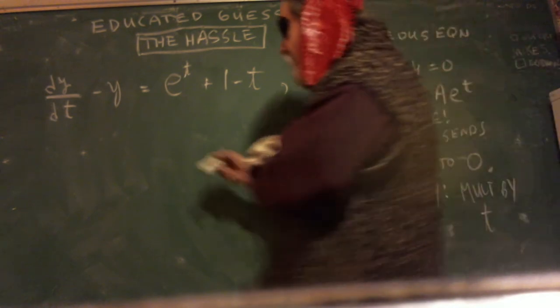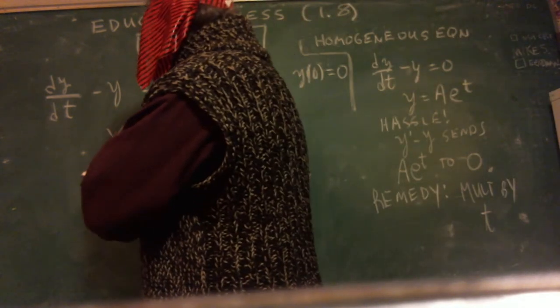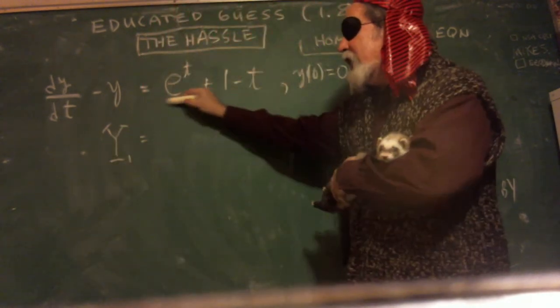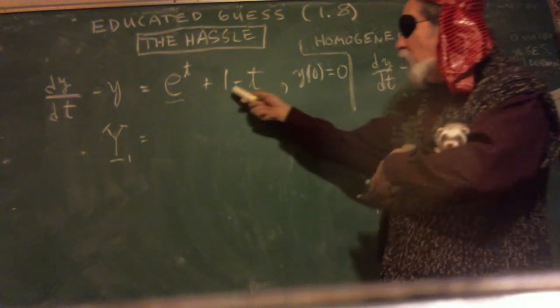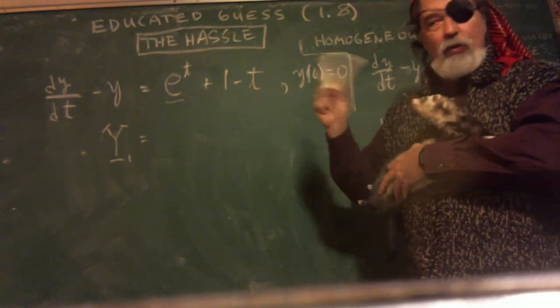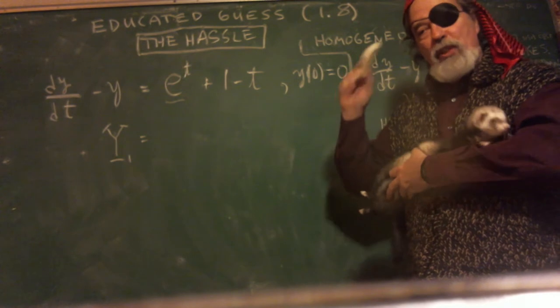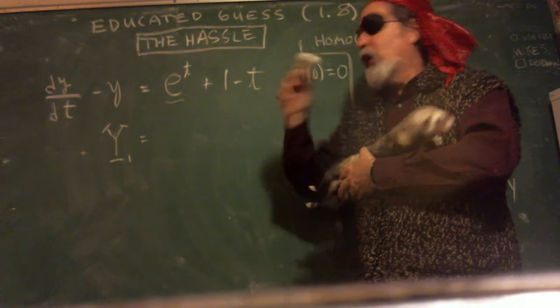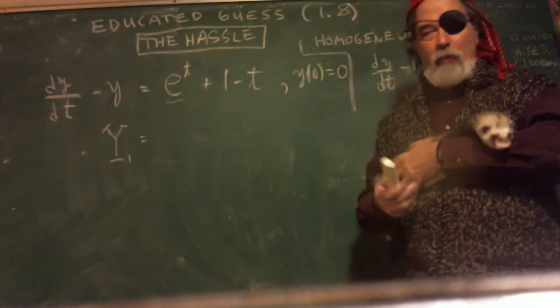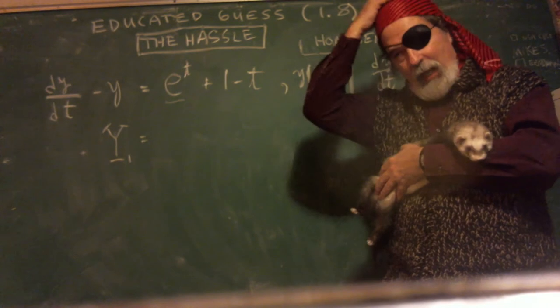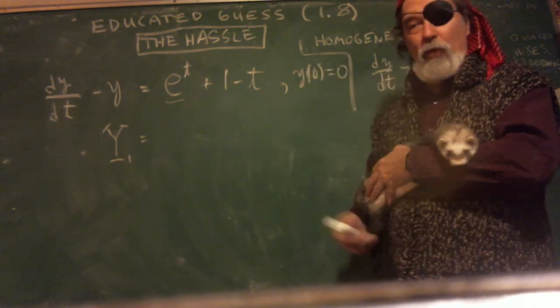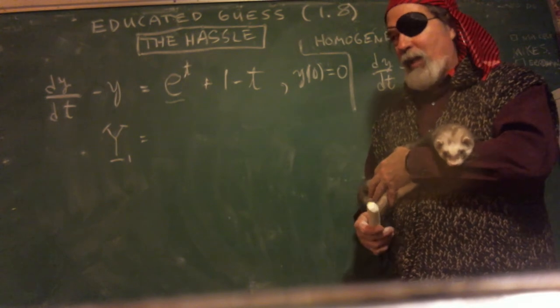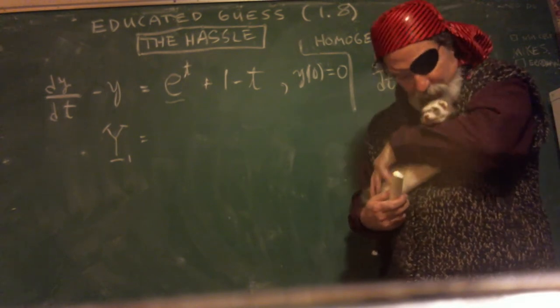You're going to have your first piece of y, and I'm calling it sub one, because check it out. I've got an e^t piece, and I've got a 1 minus t piece. Those are two different species. So I'm going to be doing an educated guess for each piece. And when I go to do this piece, if I remember, I'll take off the stupid eye patch and the pirate hat and try and do it like normal, because I don't have the hassle. I'm not doing the pirate version or whatever you want to call it.